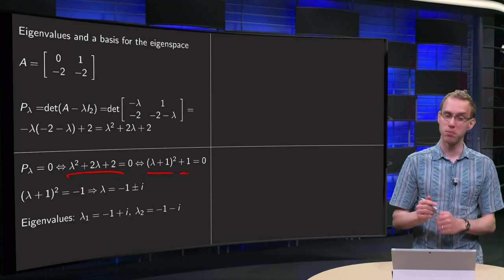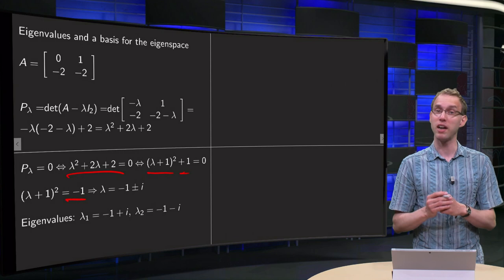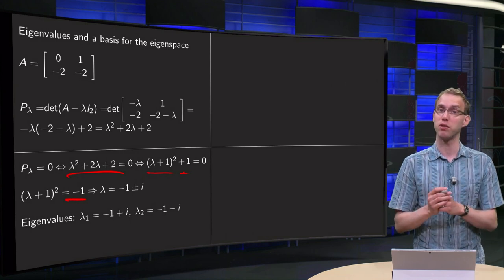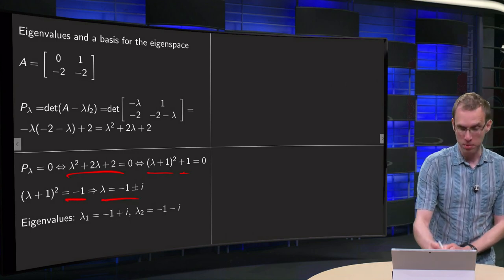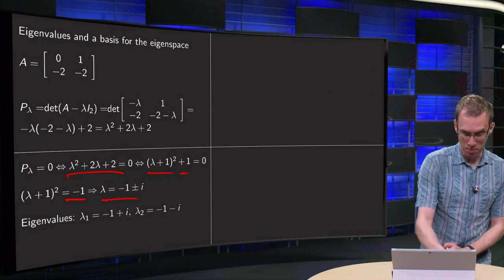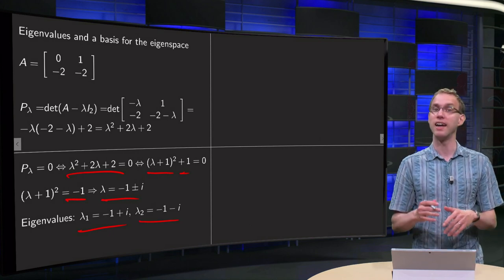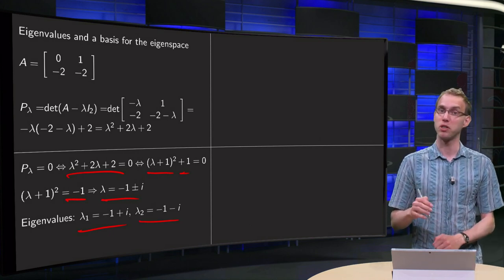Then we can solve this equation. Put the plus 1 to the other side, we get lambda plus 1 squared equals minus 1, so we have lambda plus 1 equals plus or minus i, or lambda equals minus 1 plus or minus i. And we have our 2 eigenvalues: lambda 1 minus 1 plus i and lambda 2 minus 1 minus i. As you see, they are each other's complex conjugate.